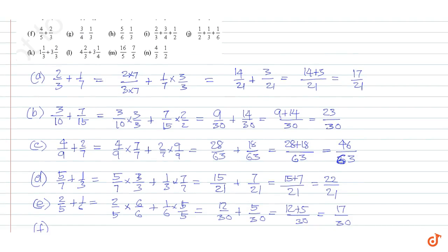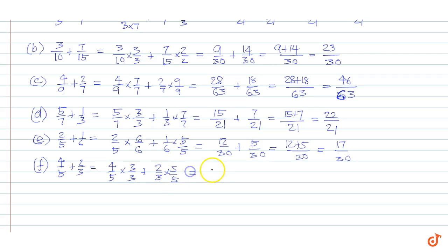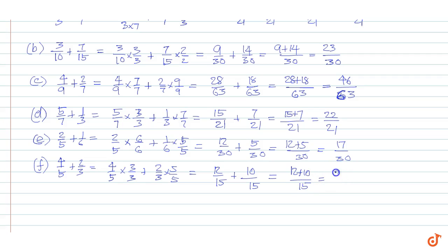Part f: 4/5 plus 2/3. Taking LCM as 15, we get 4/5 into 3/3 plus 2/3 into 5/5, equal to 12/15 plus 10/15, equal to 12 plus 10 divided by 15, equal to 22/15.